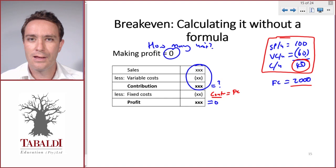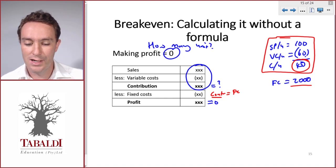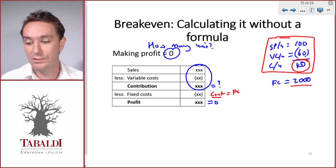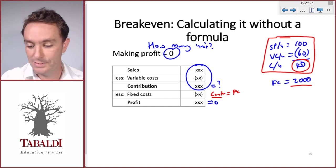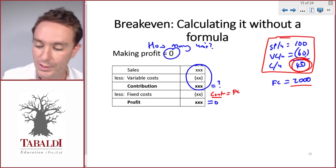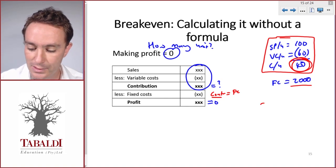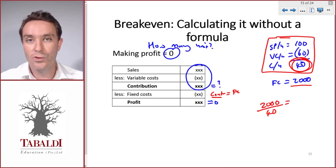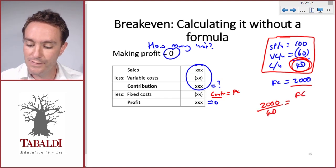Now we can change the question of how many units do we need to sell to make our contribution equal to our fixed costs to: how many units do we need to sell, or how many 40s do we require to get to 2,000 to cover our 2,000? And there we have our formula.